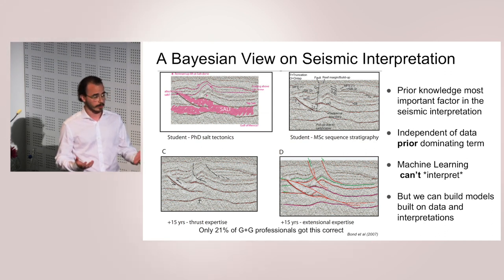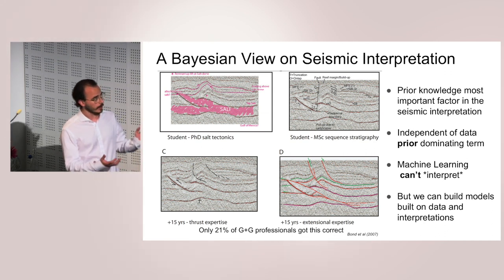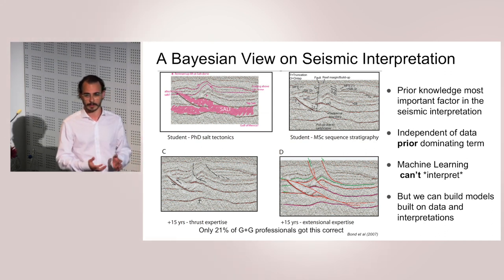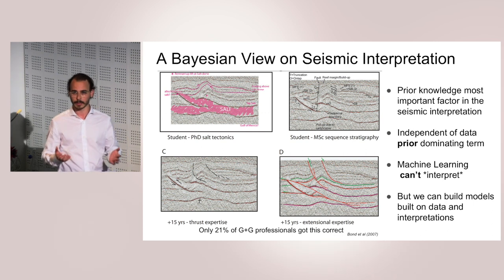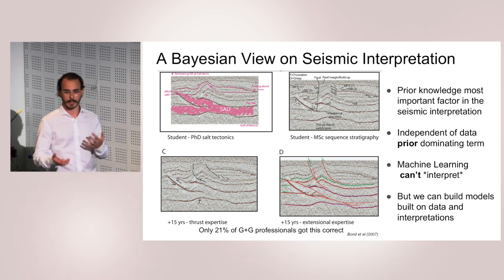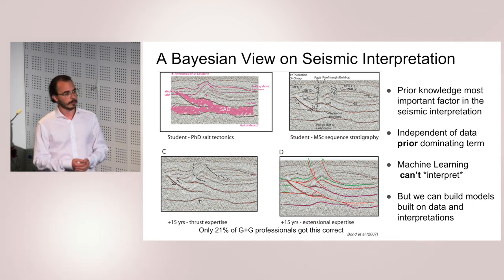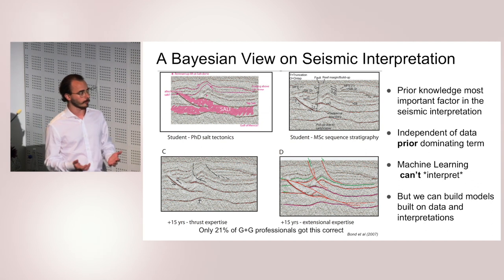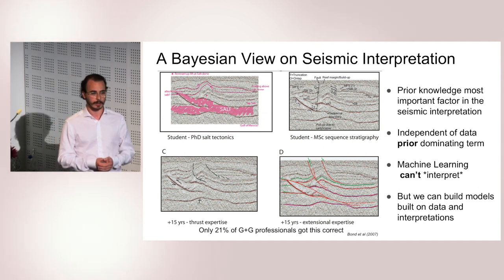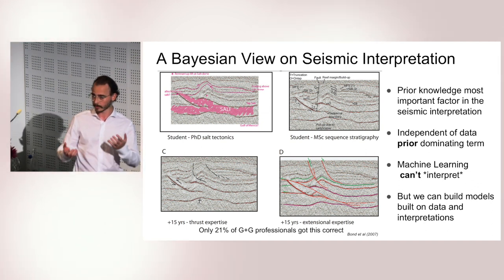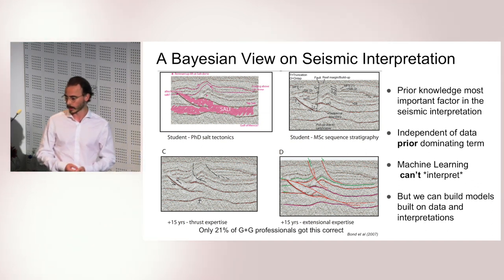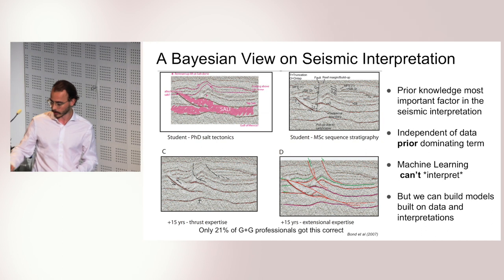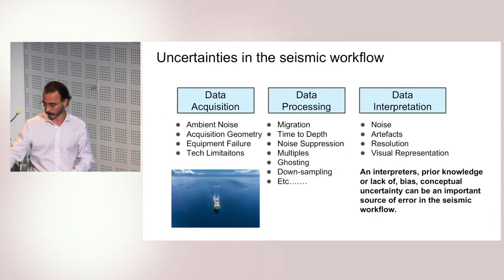What's important to point out is that machine learning can't really interpret in the sense that it's putting meaning to the data. We can only assign labels. The way that we do that is we build models based on interpretations of these humans. So we have to take that into account when we actually perform this machine learning task.